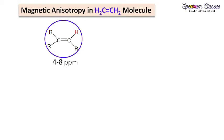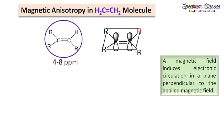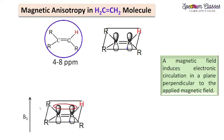The alkene molecule resonates at 4 to 8 ppm. Because of sp2 hybridization, this molecule is planar in geometry, and these are the p orbitals which form the pi bond. These p orbitals are perpendicular to the plane of the molecule. When we place this molecule in the magnetic field, the magnetic field induces electronic circulation in a plane perpendicular to the applied magnetic field B0. The electrons present in the pi orbital will circulate in the plane perpendicular to the applied magnetic field.